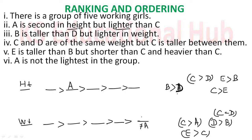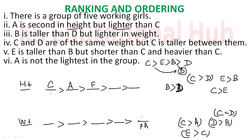Combining all clues for height: B is greater than D, and E is greater than B — so E is above B. B is greater than D. C is greater than D, and C is greater than E — so C's position comes out. D's position: since C and B are both greater than D, D must be placed after both. Height order from tallest: C, E, B, D — and A is second, so A fits in the second position. Height arrangement is complete: C, A, E, B, D.